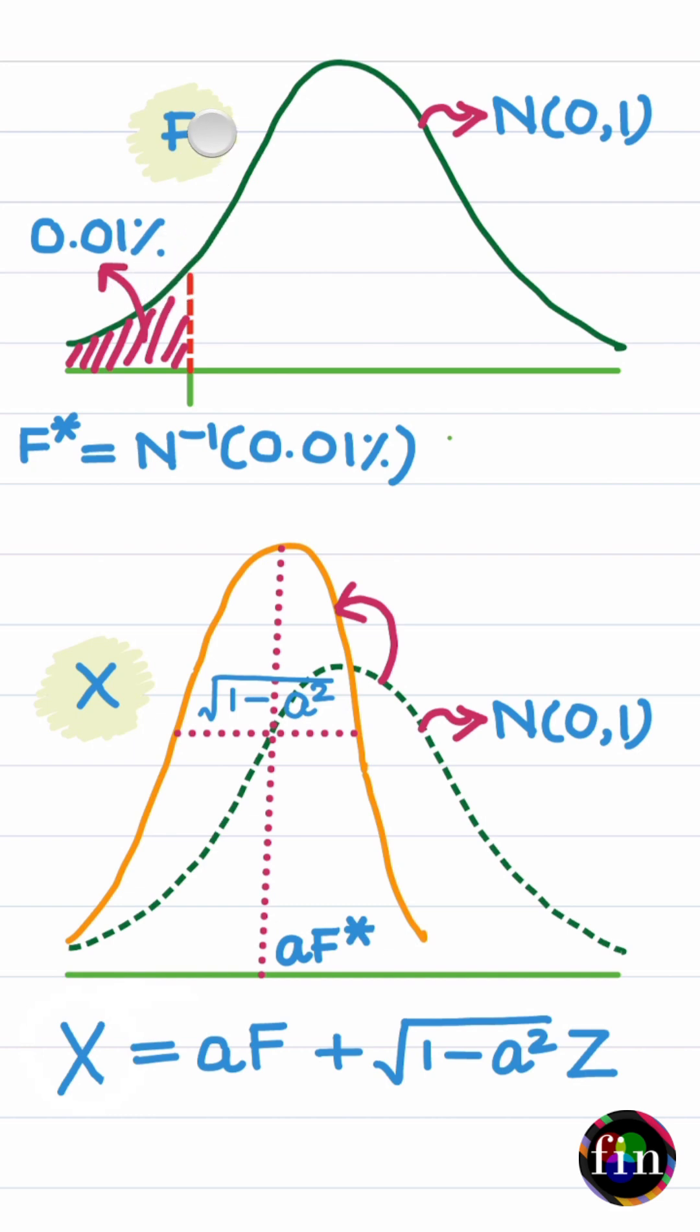In that worst case situation where the macroeconomic factor F takes on an extreme value F star, the conditional distribution of X becomes the normal distribution with A times F star to be the mean and this as the standard deviation.